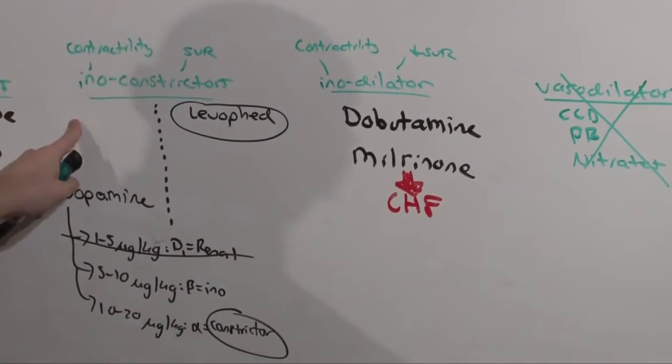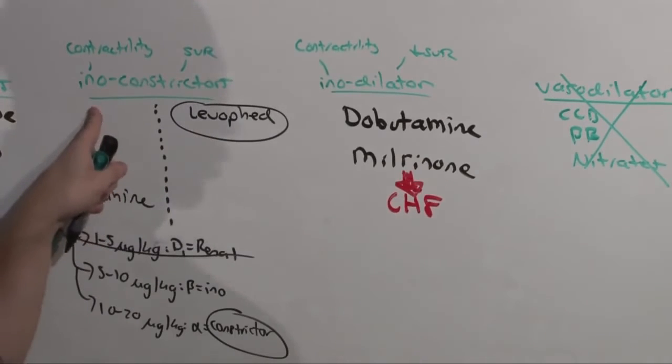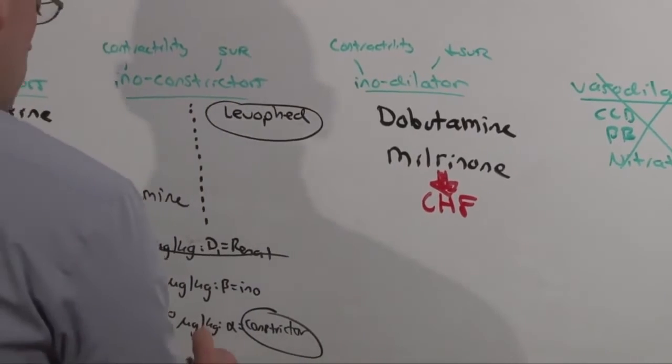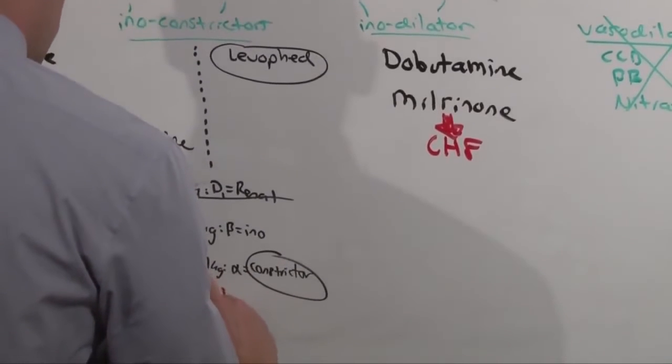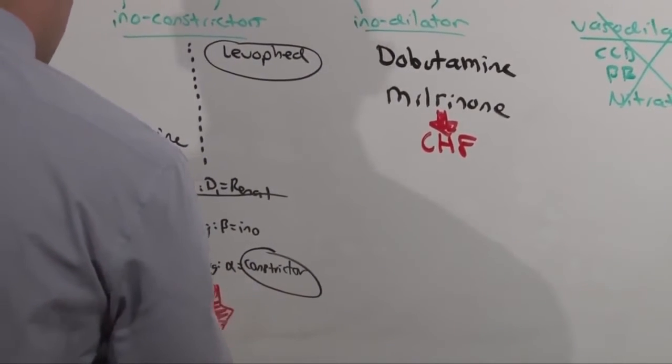The innoconstrictors, levophed and dopamine, provide both inotropic activity as well as vasoconstrictor support. These medications are ideal in sepsis.